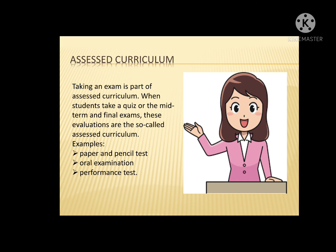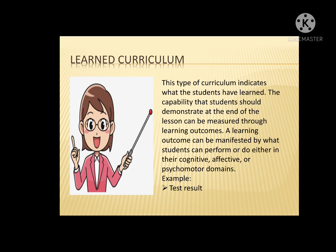The next type is the learned curriculum. This type of curriculum indicates what the students have learned. The capability that students should demonstrate at the end of the lessons can be measured through learning outcomes. Learning outcomes can be manifested by what students can perform or do either in their cognitive, affective, or psychomotor domains. The test results can determine the learning outcomes that students achieve through learning objectives. The example of the learned curriculum is the test results.